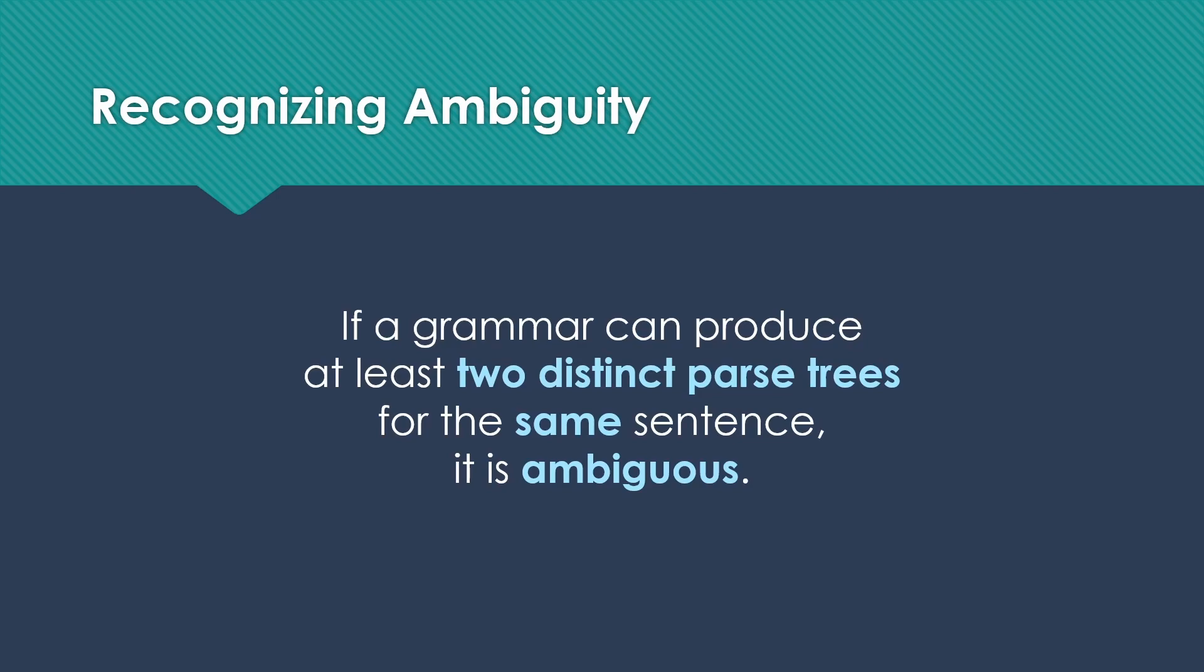How we recognize ambiguity is to look at the parse trees that a grammar produces. So if a grammar can produce at least two distinct, two different parse trees for the same sentence, then that grammar is ambiguous.